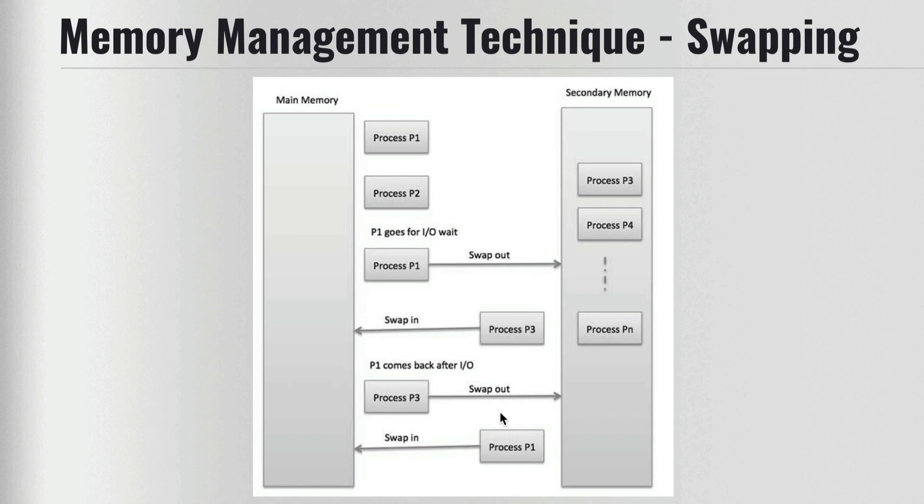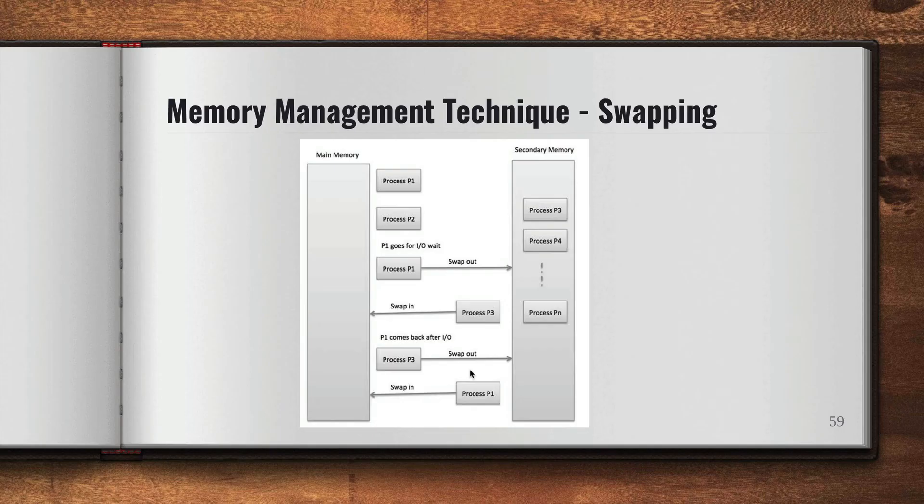Let's take an example. The user process size is 2048 KB and the standard hard disk, which is the secondary memory, has a transfer rate of 1 Mbps per second for swapping. If we calculate the time it will take to transfer that process from main memory to secondary memory, it will be the process size divided by the transfer rate, which comes to 2048 KB divided by 1 Mbps or 1024 Kbps. That makes 2048 divided by 1024, which is 2 seconds.